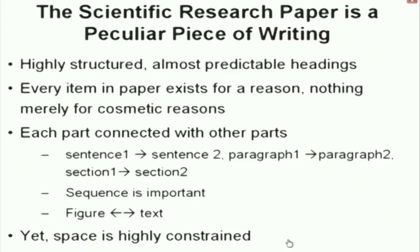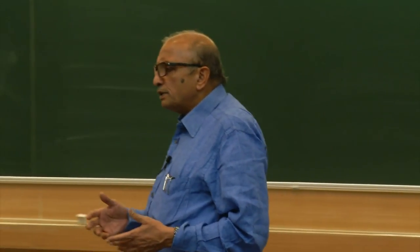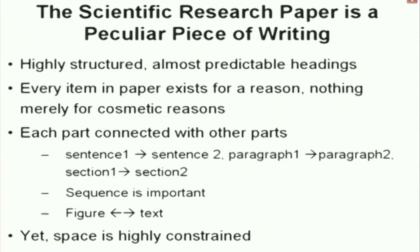One thing to understand before getting the details of a paper: a scientific research paper is a very peculiar piece of writing. It's not a story. If you look at what she has written, it's highly structured — almost predictable headings. Every item in a paper exists for a reason, nothing merely for cosmetic reasons. That is the difference between a story and a research paper. Each part is connected with other parts; sentence, section, sequence is important, and figures and text correlate. Books are written like that too — chapters, etc.